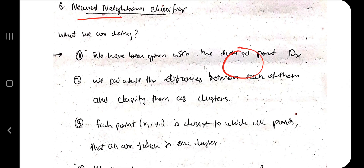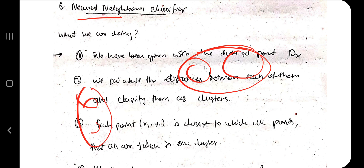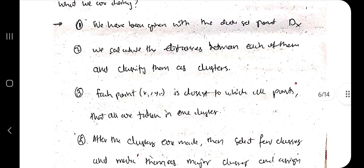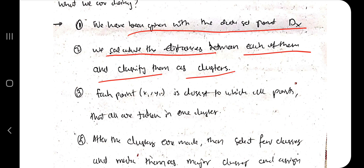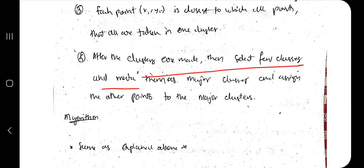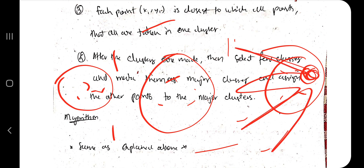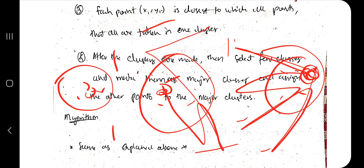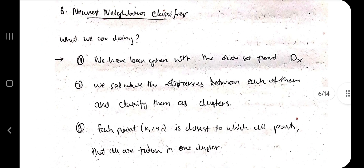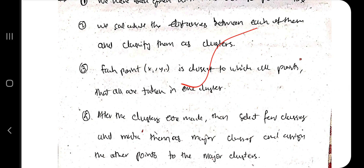The Nearest Neighbor Classifier groups nearby points together. Given dataset Dx, we calculate distances between all points and classify them into clusters — points closest to each other form one cluster. After clusters are formed, we select major clusters and assign the remaining outside points to whichever major cluster they are nearest to. The Euclidean distance formula (x minus y) is commonly used here.